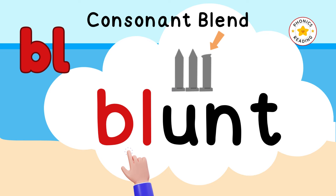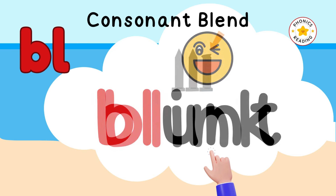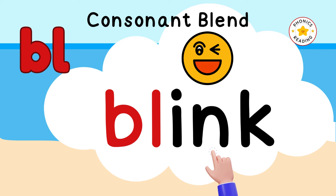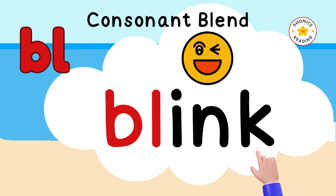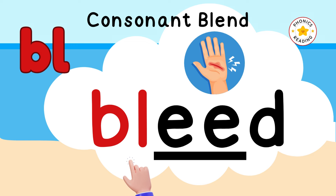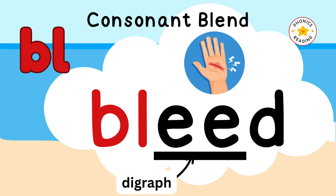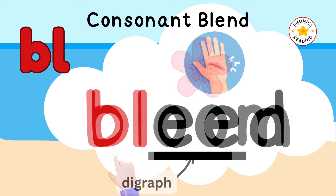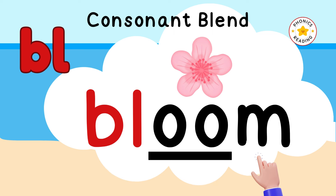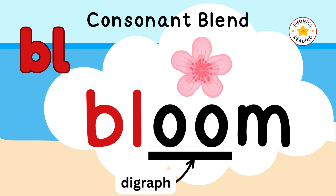BL, A, N, T — blunt. BL, I, N, K — blink. BL, E, D — bleed. E is a digraph. BL, O, M — bloom. OO is a digraph.